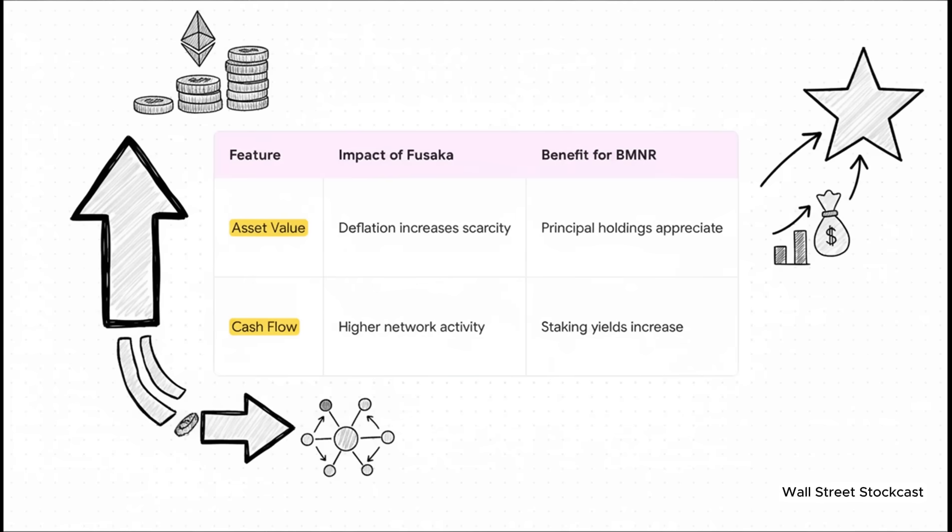Now here's where it gets really, really interesting. The thesis calls this a financial anomaly. See, usually in investing, you have to pick. You can go for a growth asset that you hope appreciates, or you can go for a yield asset that pays you cash flow. But the argument here is that with BMNR, you get both. First, the value of their main asset, that huge pile of 3.73 million ETH, goes up as it gets scarcer. But second, the cash flow from that asset also goes up. All this new network activity means more fees for validators, and BMNR captures that increased yield through their staking operations. So the asset's value goes up, and the cash it generates also goes up. It's a rare double win. Plain and simple.